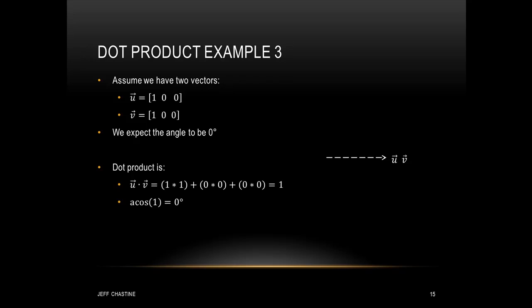As a third example, imagine two parallel vectors: u = (1, 0, 0) and v = (1, 0, 0). We expect the angle to be 0 degrees. Computing: 1×1 + 0×0 + 0×0 = 1. Taking the arc cosine of 1 gives us back 0 degrees.